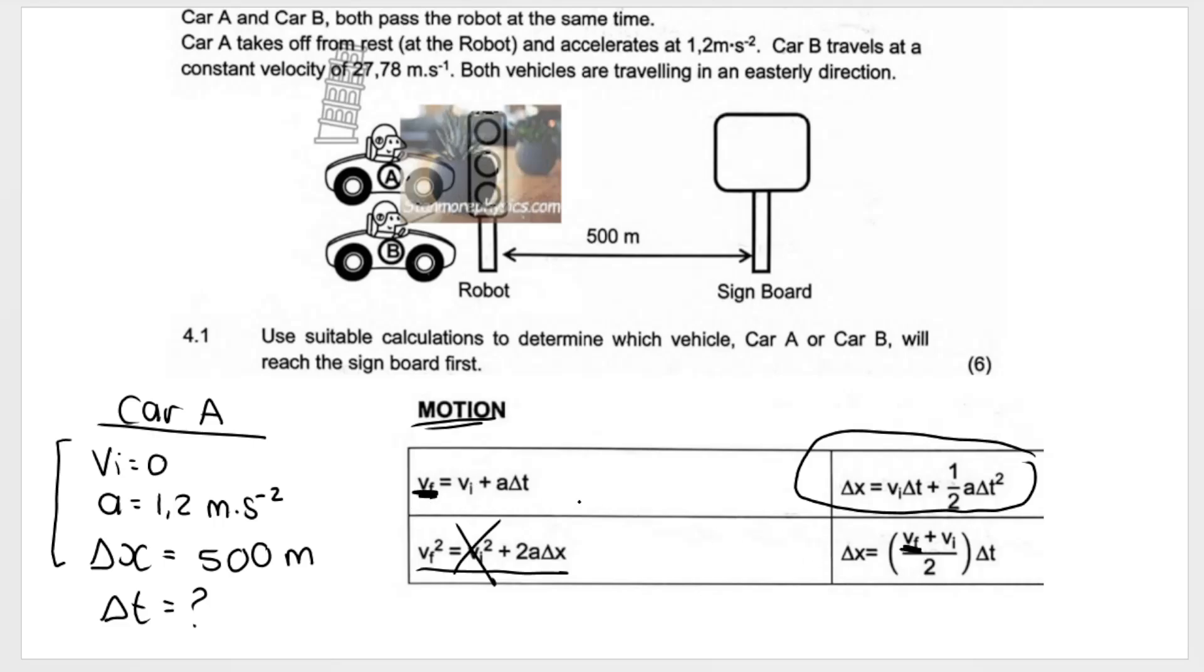This one is final velocity, so I'm going to avoid that one. This one is final velocity, so I'm going to avoid this one. I'm going to try and use this one, because I have displacement or distance, Δx, that's 500 meters. I have initial velocity, I'm looking for time, and I have acceleration. So that's my formula of choice.